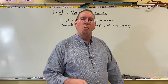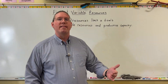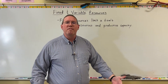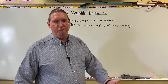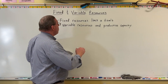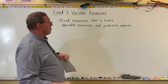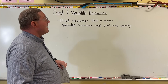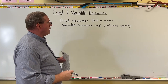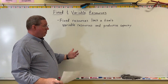We're assuming, ceteris paribus, that the firm wants to maximize their profit. We're assuming that they want to be reasonably efficient. So there's going to be a limit on how many variable resources they need, and that's going to limit how many variable resources they buy.